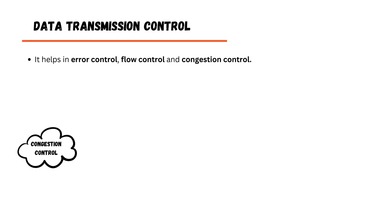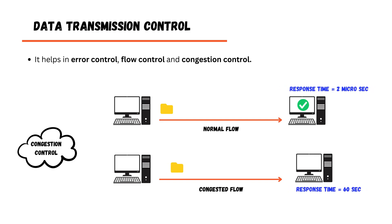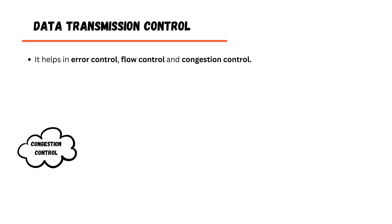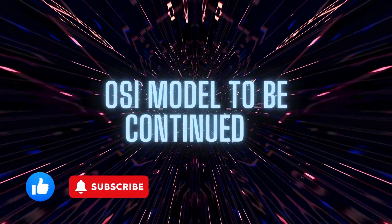Congestion control at the transport layer is handled by four algorithms. Congestion is a state where the network is overwhelmed with traffic, causing increased response times and delayed replies. The four congestion control algorithms are: Slow Start, Congestion Avoidance, Fast Retransmit, and Fast Recovery. These topics — TCP 3-way handshake, congestion control, and error control — will be covered in detail in the TCP series. Next, we move on to the network layer.